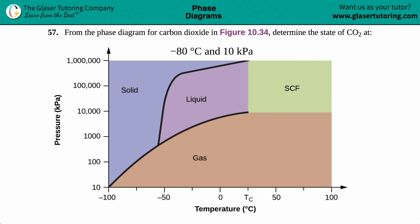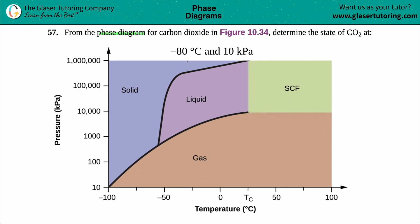Number 57: from the phase diagram for carbon dioxide, figure 10.34, we need to determine the state of CO₂ at negative 80 degrees Celsius and 10 kilopascals.